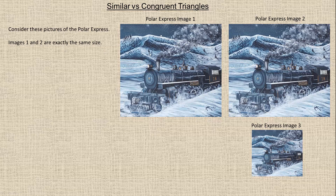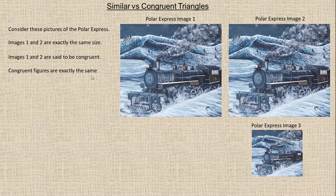If you look at the first two — image one and image two — they are exactly the same size. Image one and two are exactly the same size. So if things are exactly the same size and shape, they're said to be congruent. Congruent figures are exactly the same shape and the same size.